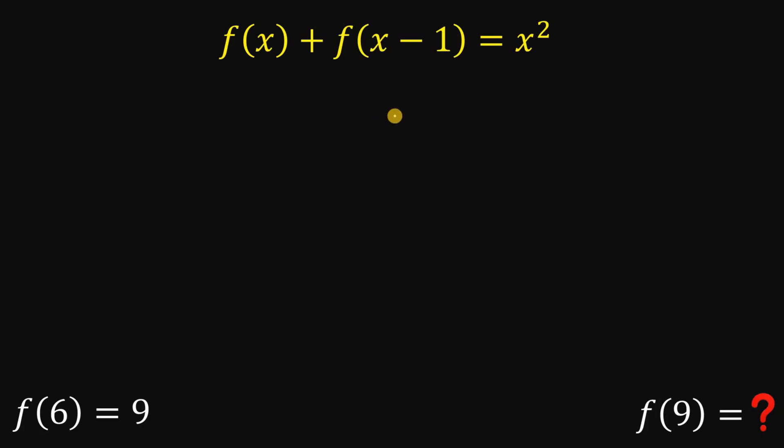First, let's plug in x = 7 because 7 - 1 will give us 6. So if we let x = 7, we have f(7) + f(6) = 7². Next, if we plug in x = 8, we have f(8) + f(7) = 8².